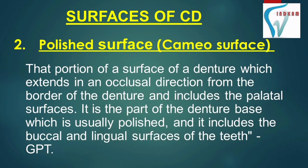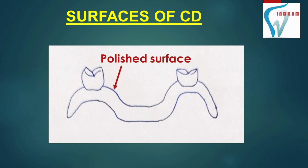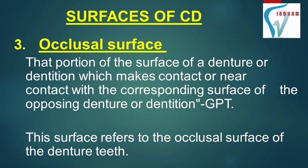You can see the impression surface marked with the red arrow in the picture. The second surface is the polished surface, also known as the cameo surface. It is that portion of the denture surface which extends in an occlusal direction from the border of the denture and includes the palatal surfaces. It is the part of the denture which is usually polished, and it includes the buccal and lingual surfaces of the teeth. These surfaces are the external surfaces of the lingual, buccal, and labial flanges and the external palatal surface of the denture. You can see the polished surface marked in the diagram.